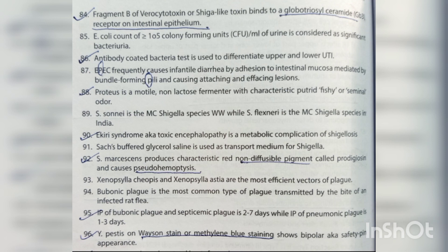Fragment B of verocytotoxin (Shiga-like toxin) binds to globotriosylceramide receptor on intestinal epithelium. An E. coli count of >10⁵ colony-forming units per mL of urine is considered significant bacteriuria. Antibody-coated bacteria test is used to differentiate upper from lower UTI. EPEC frequently causes infantile diarrhea by adhesion to intestinal mucosa mediated by bundle-forming pili, causing attaching and effacing lesions. Proteus is a motile non-lactose fermenter with a characteristic putrid, fishy, or seminal odor.